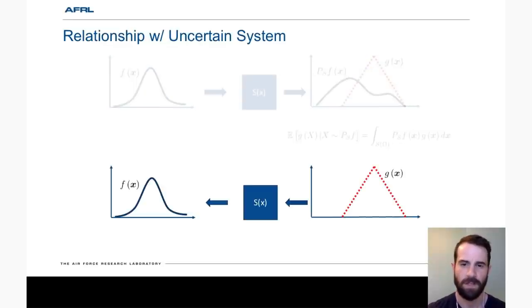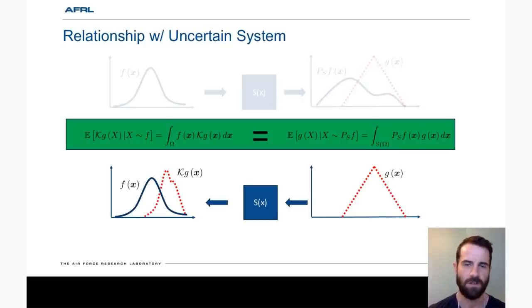Alternatively, we could think of taking the observable function g and pulling it back through the system using the Koopman operator. That allows you to compute a new observable kg. Now we could take the expectation of this new observable with respect to the initial pdf or density f as shown. But these two approaches are equivalent.